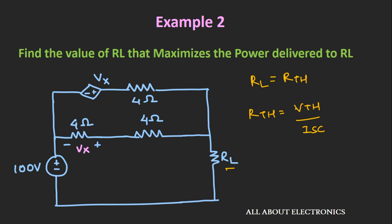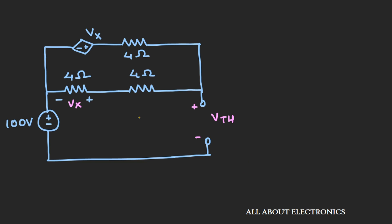Where Vth is the Thevenin's equivalent voltage across load resistance RL, and Isc is the short-circuit current across the two terminals where RL is connected. To find Vth, let's remove RL from the circuit. With RL removed, this particular loop is open-circuited, so no current flows through it and there is no voltage drop across the 4 ohm resistor. Hence the value of Vx will be 0, and the voltage across the two terminals will be 100V. So the Thevenin's equivalent voltage is 100V.